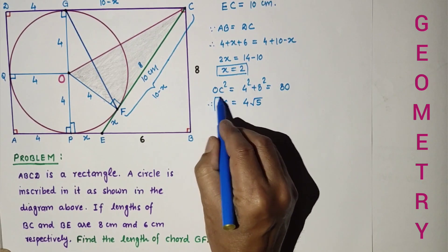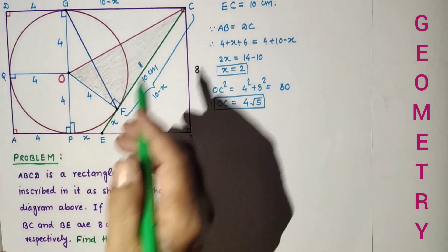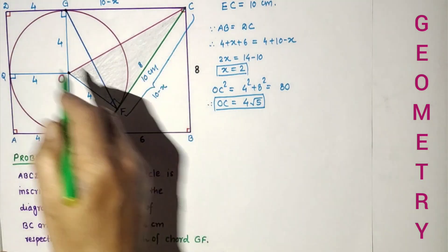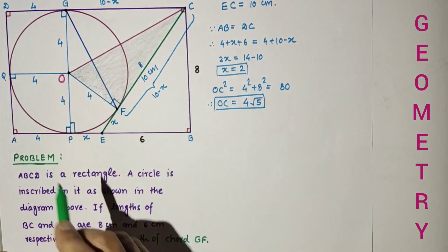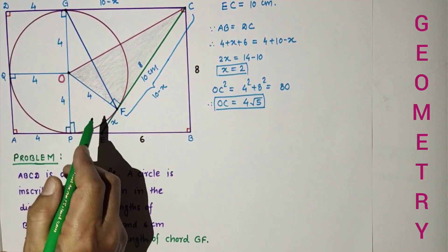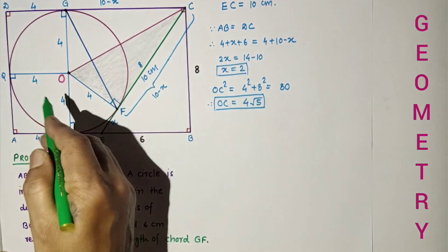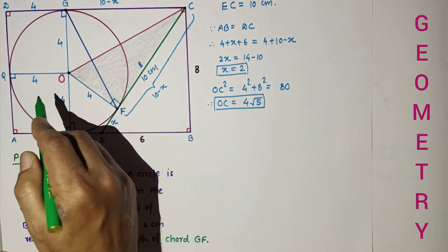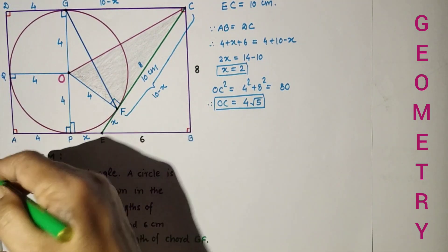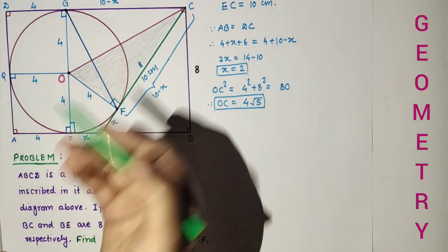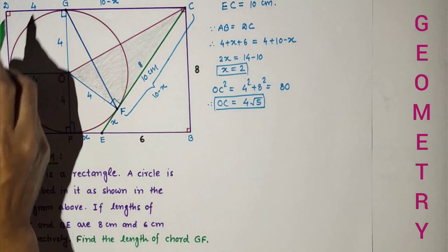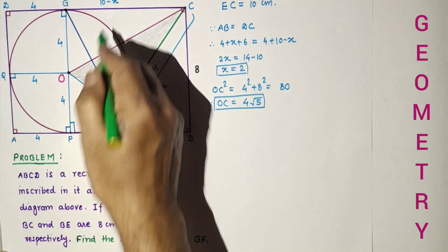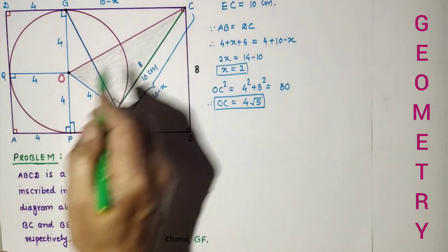OC is found to be 4√5. There are two methods to find chord length GF. Method 1: OFCG is a kite because the same base GF is there and there are two isosceles triangles. The area of the kite is half the product of the diagonals. We already know OC and we need to find GF. Triangles OGC and OFC are congruent.